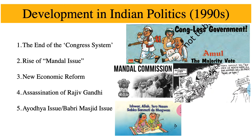By the end of the 1980s, India witnessed five developments that made a long-lasting impact on Indian politics. These five developments were: the end of the Congress system, the rise of the Mandal issue, new economic reform, the assassination of Rajiv Gandhi, and the Ayodhya issue or the Babri Masjid issue. We'll go through them one by one.